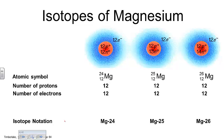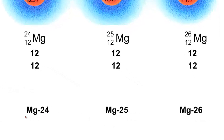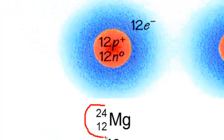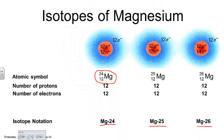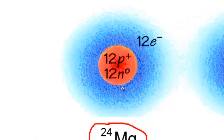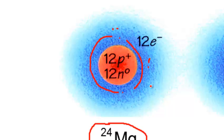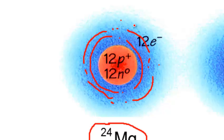In terms of Bohr model structure, here are some examples of isotopes of magnesium. There are three isotopes listed: magnesium-24, magnesium-25, and magnesium-26. In isotope notation, the mass number goes up here and the atomic number down here. For magnesium-24, that means 12 protons, 12 neutrons, and in an atom 12 electrons total — two in the first orbital, eight in the second orbital, and two in the third orbital.